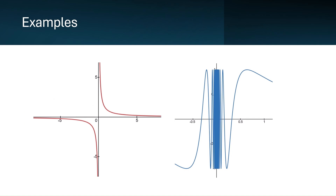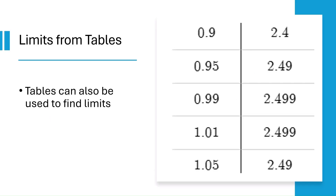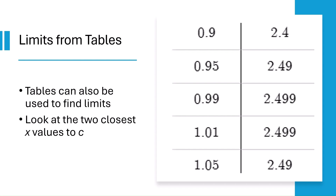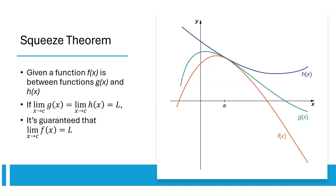Here we see an example of a function with the limit not existing at x equals 0, because y equals 1 over x is unbounded. On the right, we see a function that oscillates infinitely as x approaches 0, meaning the limit also does not exist. Using a table of values, look at x values approaching a specific point from the left and the right. If the corresponding y values get closer to the same number from both sides, that number is the limit. The squeeze theorem is used when a function is bounded between two others; if both bounding functions approach the same limit at a point, the squeezed function must also approach that limit.